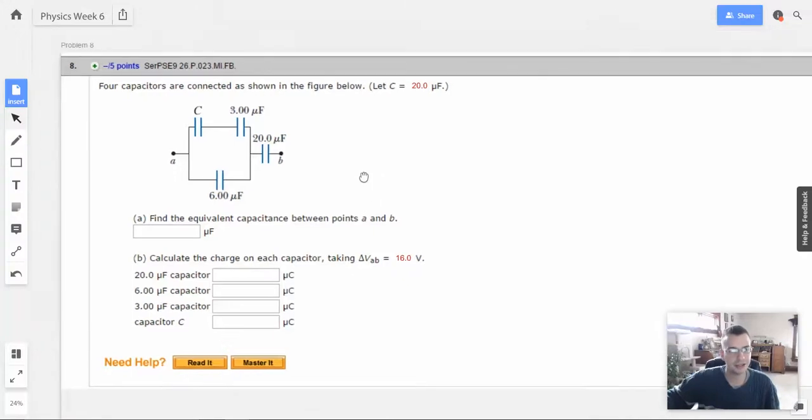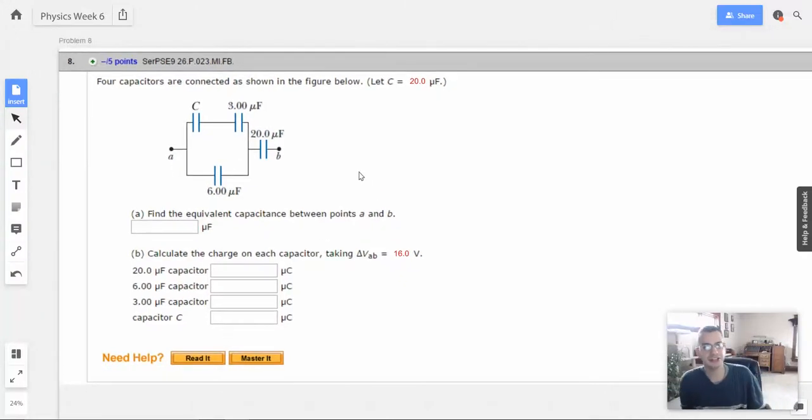Week 6, problem 8. Four capacitors are connected as shown in the figure below. Let capacitance C equal 20 microfarad. Find the equivalent capacitance between A and B.